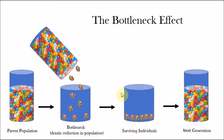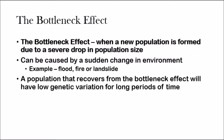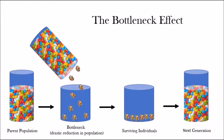The surviving individuals reproduce and create the next generation. When this happens, there is a loss of genetic variation, and because of that the allele frequencies start to change again, making the bottleneck effect an example of microevolution. Bottleneck effect is typically bad because when you lose genetic variation, you can't have natural selection, and when you can't have natural selection, the population can't evolve.